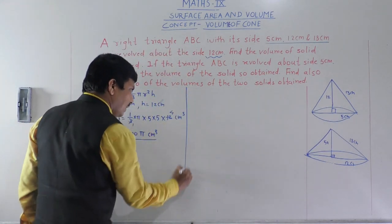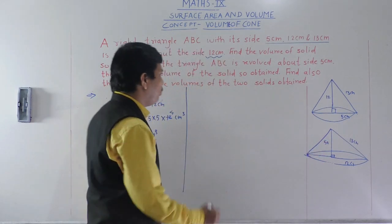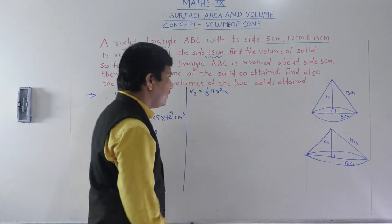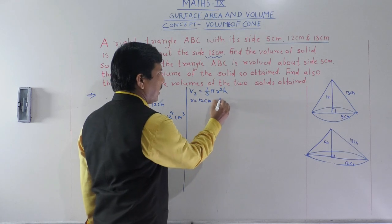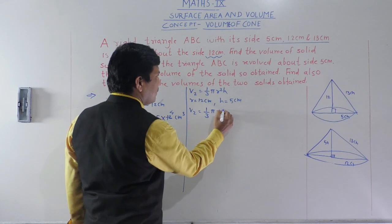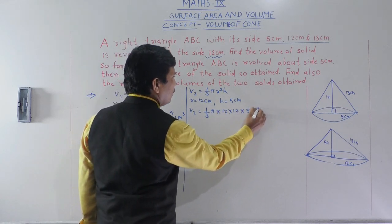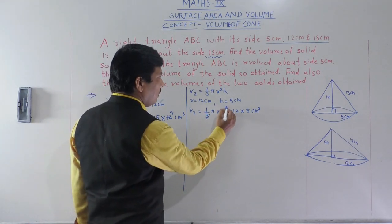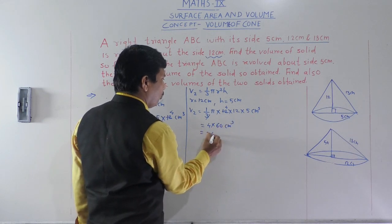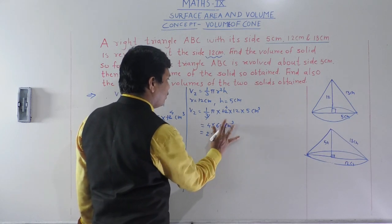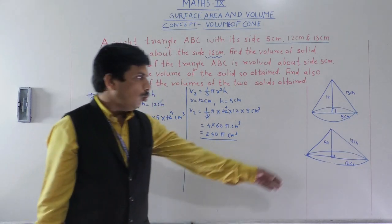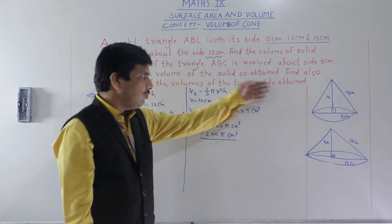Now for the second case, the triangle is revolved about the side 5 cm. Volume 2: V2 = (1/3)πr²h, where radius = 12 cm and height = 5 cm. So V2 = (1/3) × π × 12 × 12 × 5. Here 3 divides into 12 giving 4, so V2 = 4 × 12π × 5 = 240π cm³.